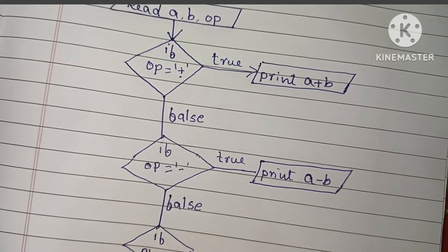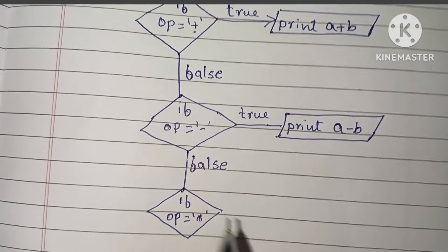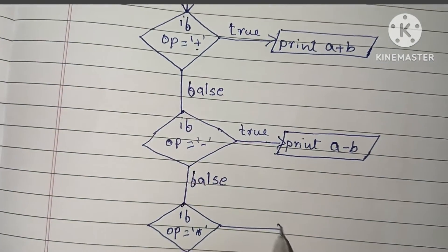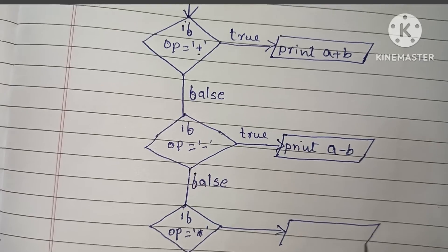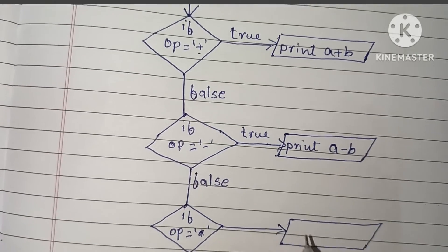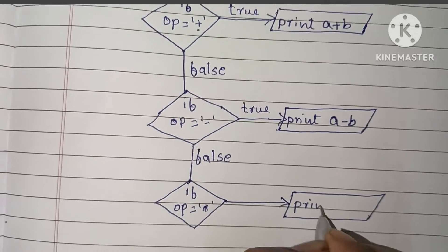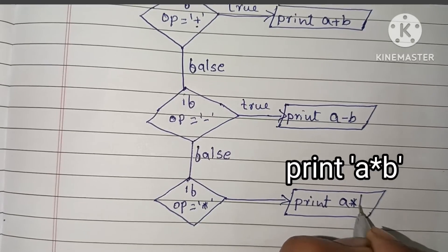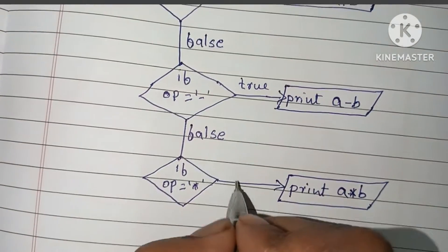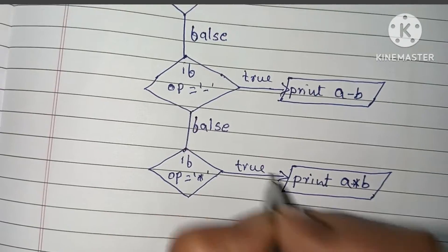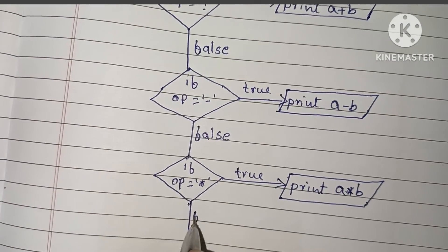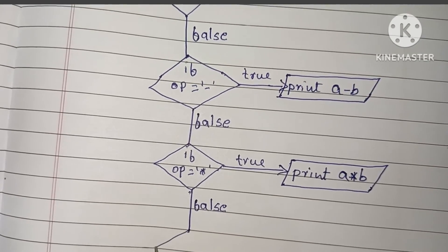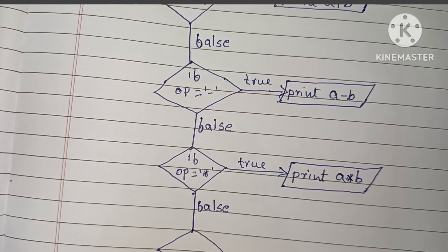If op equal to minus is false, we check for multiplication. If op is equal to the asterisk symbol — which represents multiplication — we multiply the two variables a and b and print a multiplied by b.